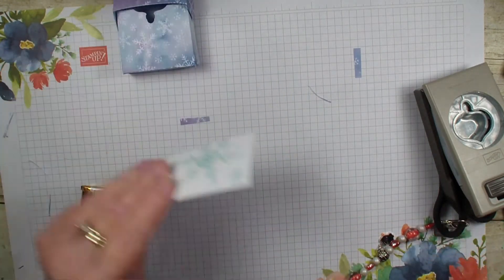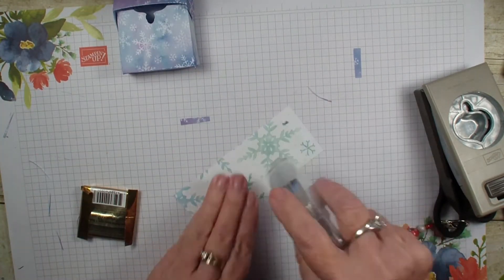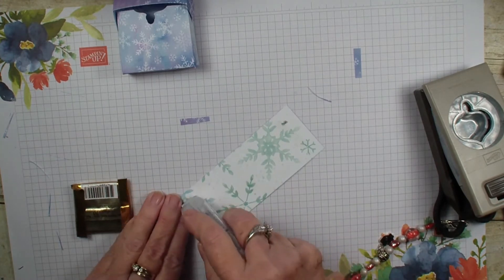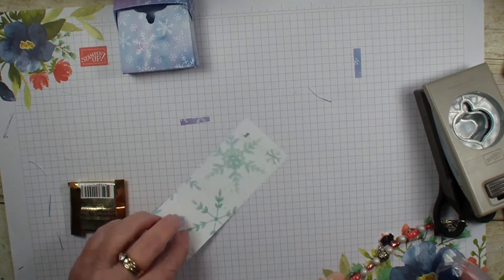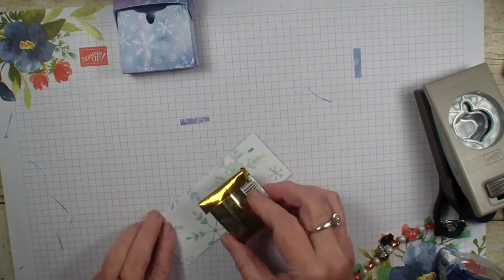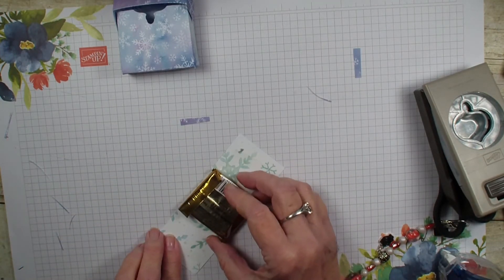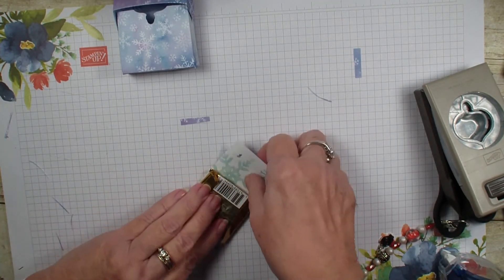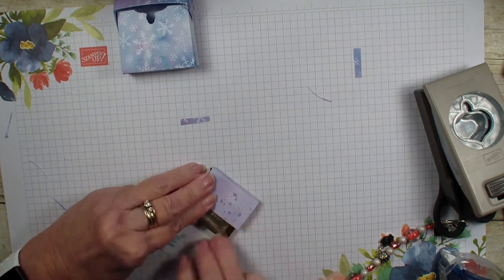I am going to bring in that Designer Series Paper. I am going to tape the two edges, ends, and then also put some adhesive in the middle. I am going to set our Ghirardelli down and cover it up with the Designer Series Paper.